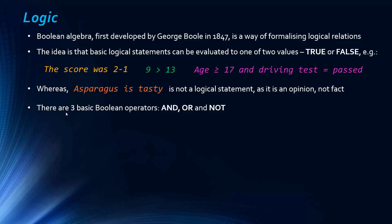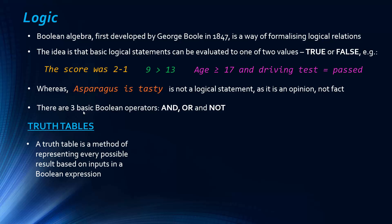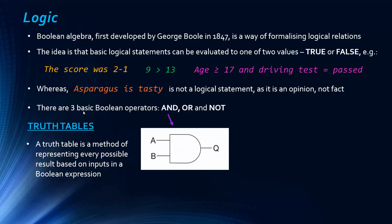There are three basic Boolean operators you need to know: AND, OR, and NOT. There are other operators basically built from these three. You also need to know about truth tables, which are a way of representing every combination of inputs and every output in a Boolean expression. Really it's just a table.